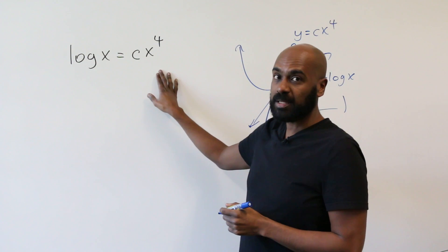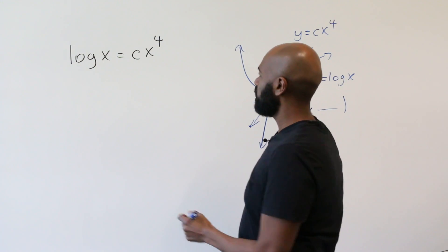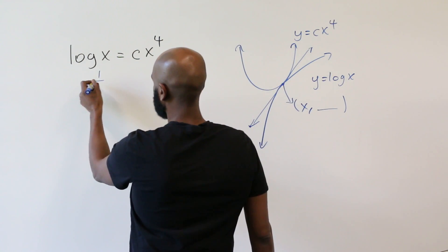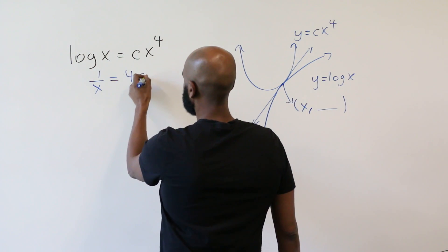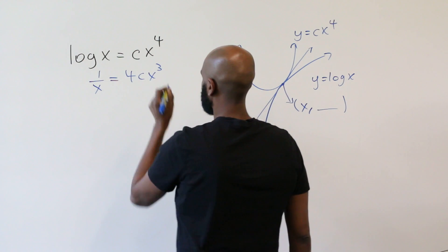So if we differentiate these thinking about them as functions of x, they're actually equal at this point that we're interested in. So 1 over x equals 4 c x cubed is another equation for us to work with.